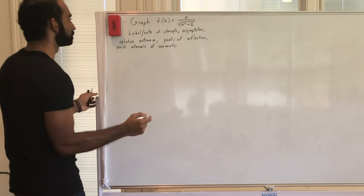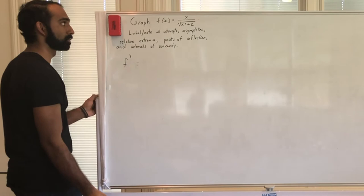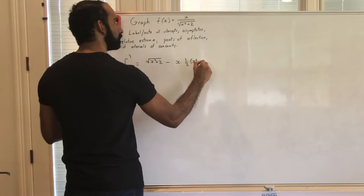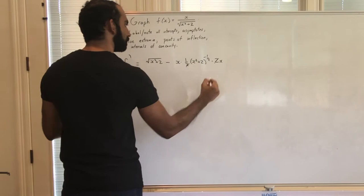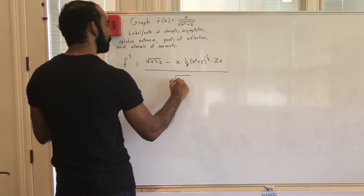Let's start with the calculus stuff and take our first derivative. We're going to do the quotient rule — low-d-high minus high-d-low times 2x, all over (x² + 2) squared.